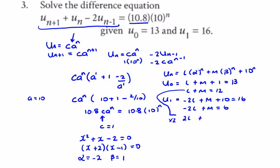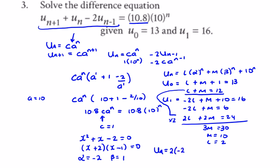Multiplying the first equation by 2 gives 2l + 2m = 24. Adding to −2l + m = 6 gives 3m = 30, so m = 10. Then l = 2. The final solution for u_n is: u_n = 2·(−2)^n + 10·(1)^n + 10^n, where 10·(1)^n = 10, giving u_n = 2·(−2)^n + 10^n + 10. That is the final solution for question three.